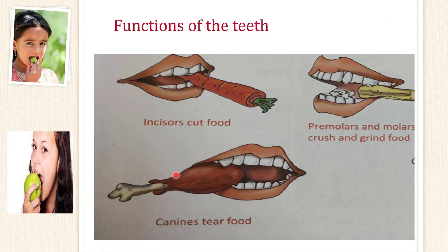Let's see the function of the teeth. Incisor helps us to cut the food. Canine helps us to tear the food. Whereas premolar and molar help us to crush and grind our food.